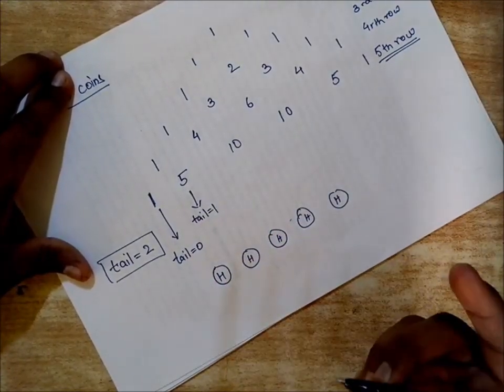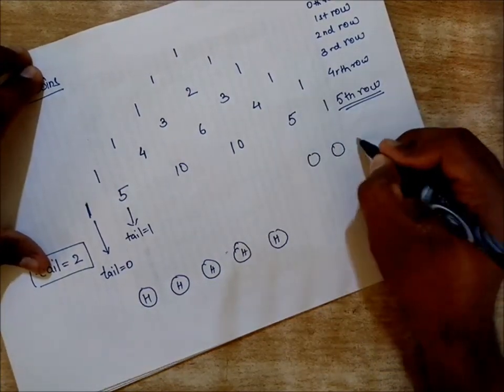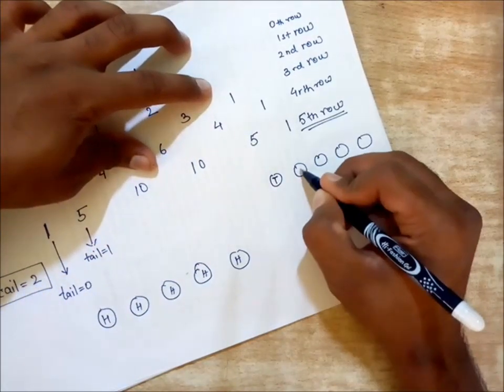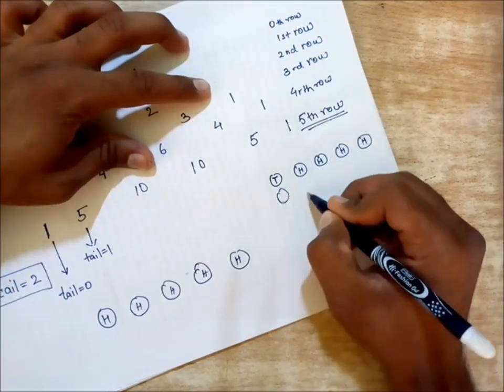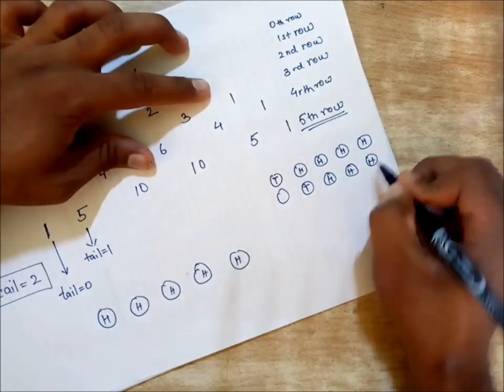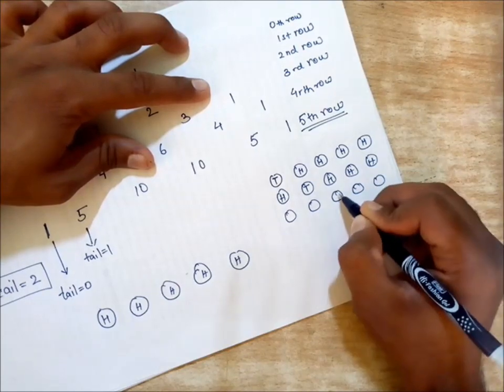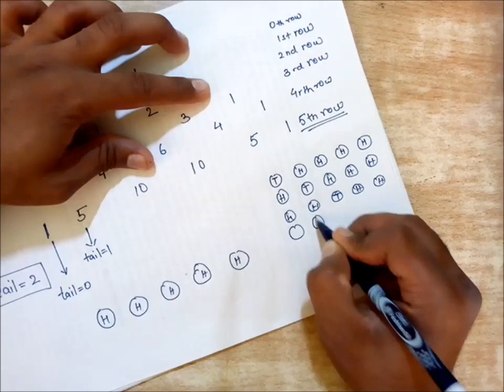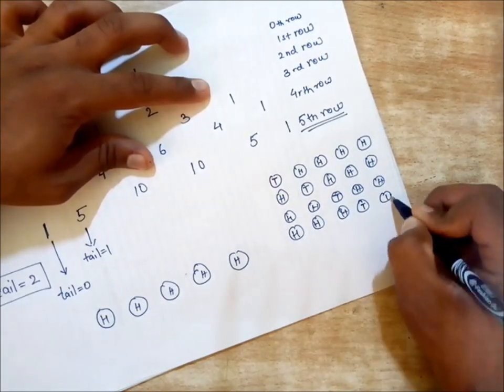This will tell you when the tail is one, meaning only one tail is occurring. That seems quite possible. If I draw five coins, the tail can occur here and these all could be heads. Then tail can occur here, rest of the coins could be heads. Similarly, this goes on when the tail comes here.